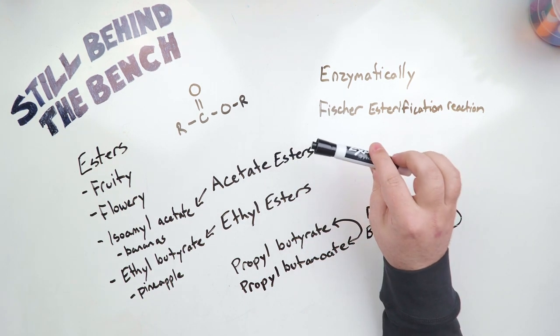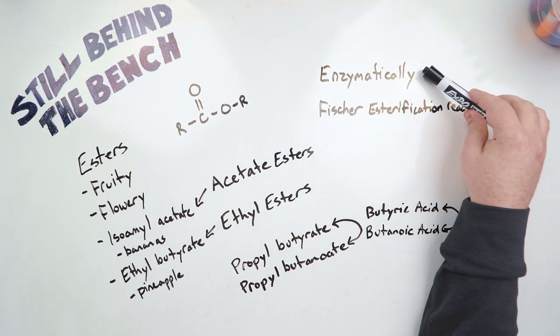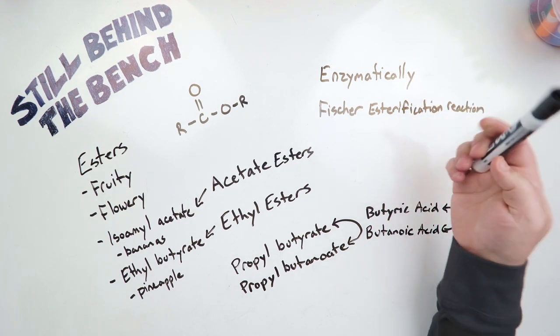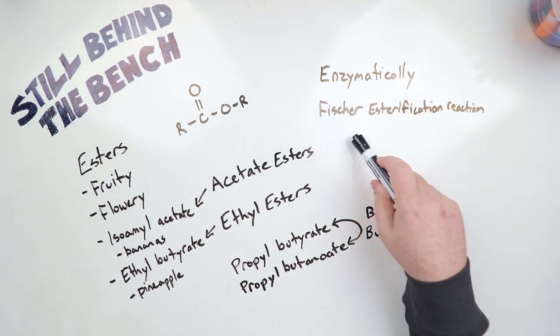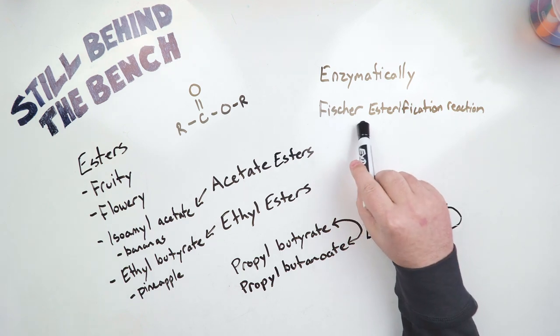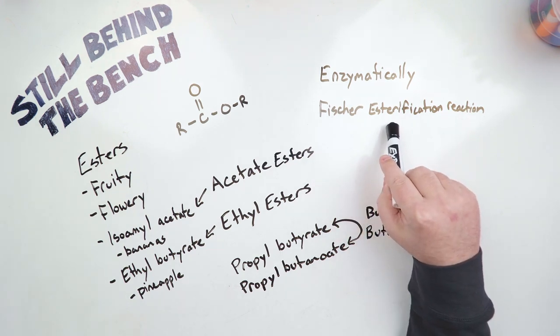So technically there are two ways that esters are produced, enzymatically, and then through non-biological chemical reactions like the Fischer esterification reaction. This is how most people learn about the production of esters.